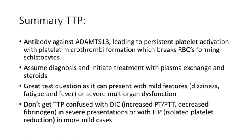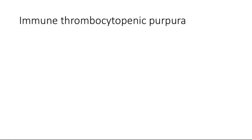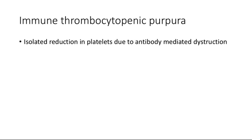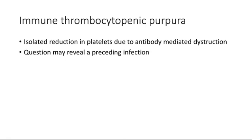Moving to ITP: the characteristic history is a young or middle-aged woman with a preceding viral infection. ITP is due to an acquired antibody against platelets leading to their destruction.